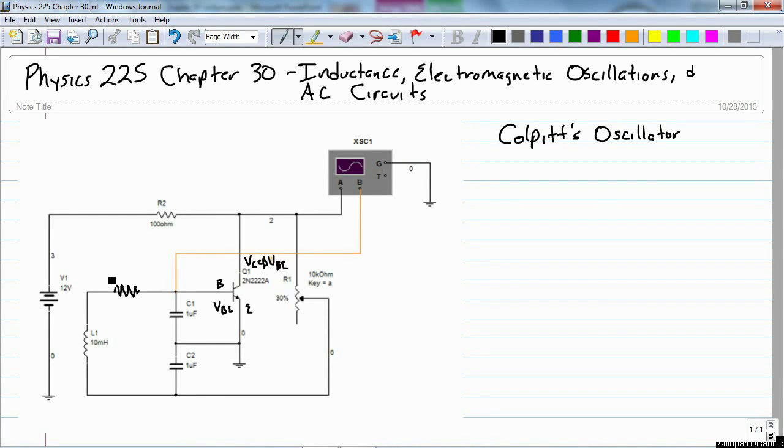When you first start up the circuit, current is going to flow through this 100 ohm resistor, R2. It can't flow through the transistor because it's not doing anything, there's not any potential across these two leads.